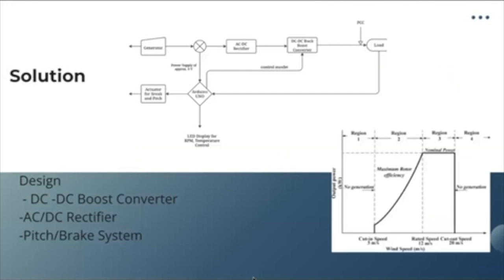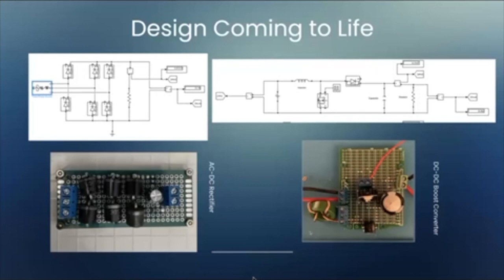Our solution has three elements to it taking consideration of our wind power control system. So for the power electronics we needed a rectifier and a DC to DC converter to control the output. The goal was to produce as much power as possible and these are our initial designs and also our final products.